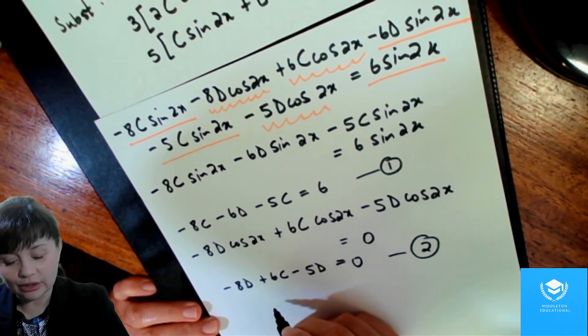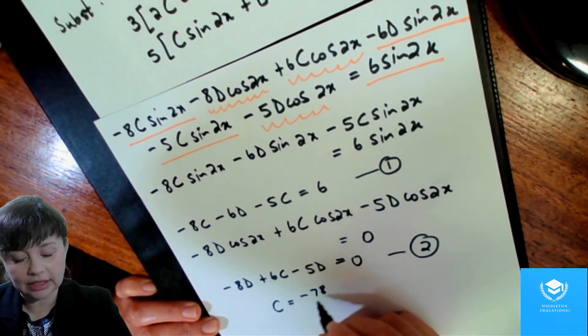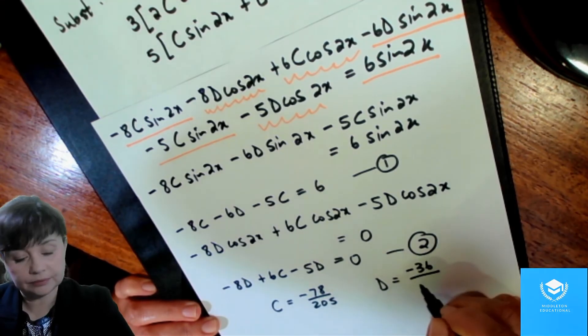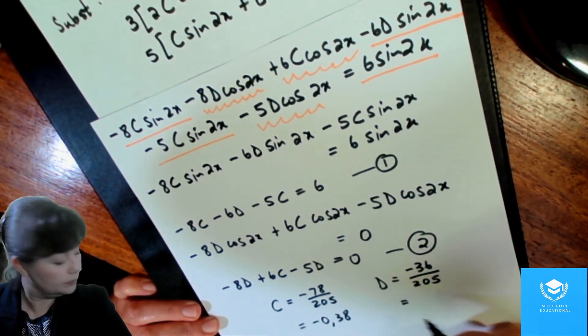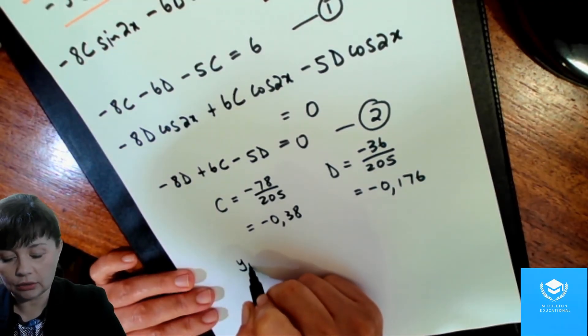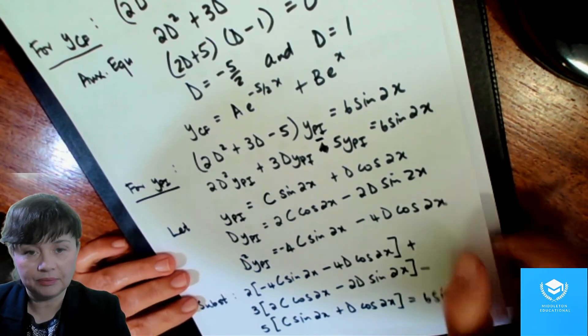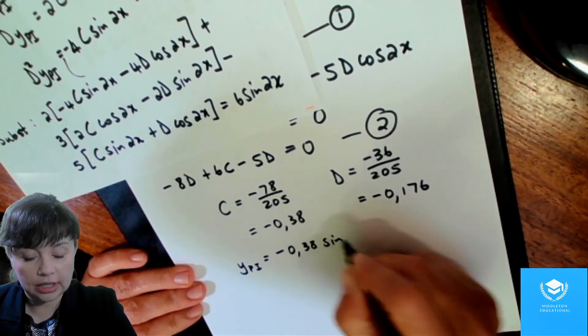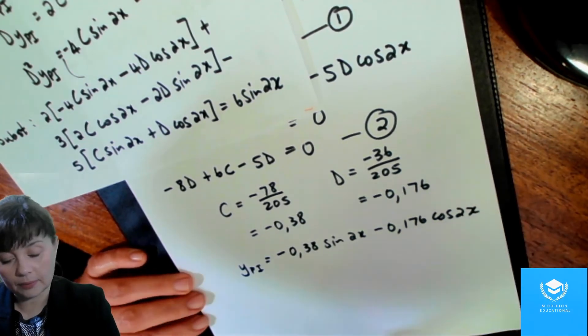So, once you simplify, you should get, and I'm going to look at my crib notes for this. C has to be equal to minus 78 over 205, and D minus 36 over 205, and that simplifies to, you can use a decimal, minus 0.38 and minus 0.176. So, our particular integral has to be, and we just make sure which one is C and which one is D. So, C is with sine. So, minus 0.38 sine 2x, and D is with the cosine. Minus 0.176 cos 2x.